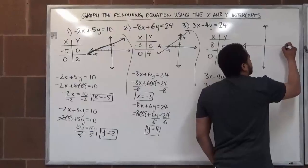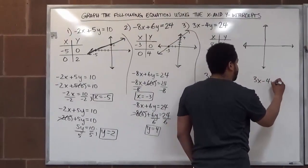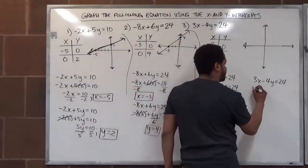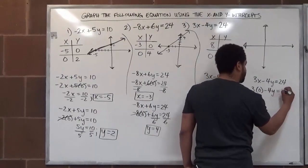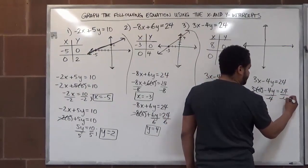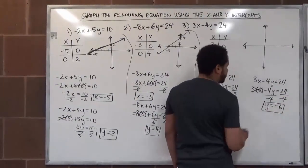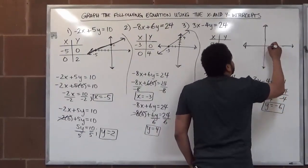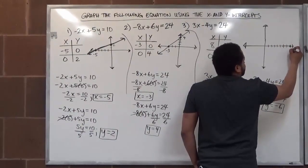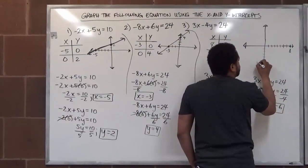This is going to go further over to the right, so let's extend the graph. Now for our y intercept: three x minus four y equals twenty-four. Substituting zero for x gives three times zero minus four y equals twenty-four. This goes away, leaving negative four y equals twenty-four. Dividing by negative four gives y equals negative six — positive divided by negative.